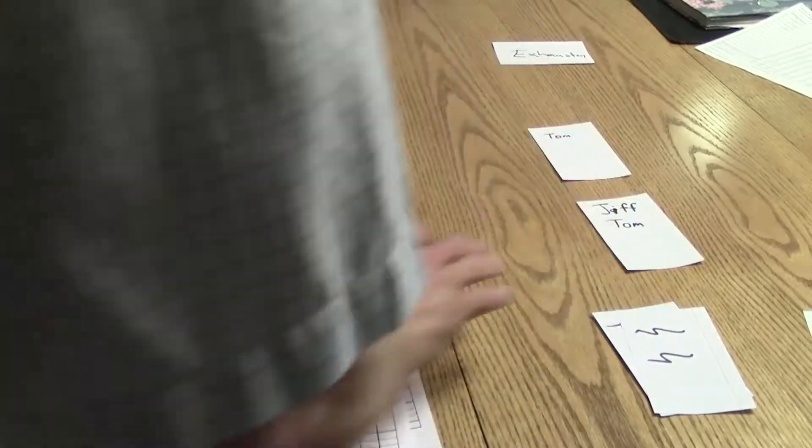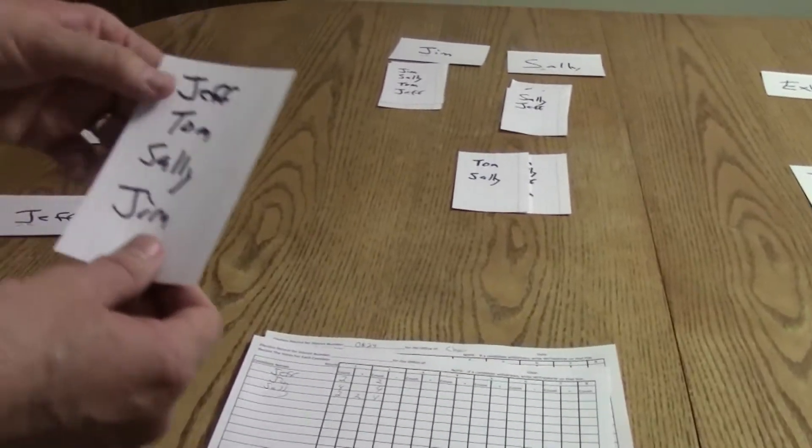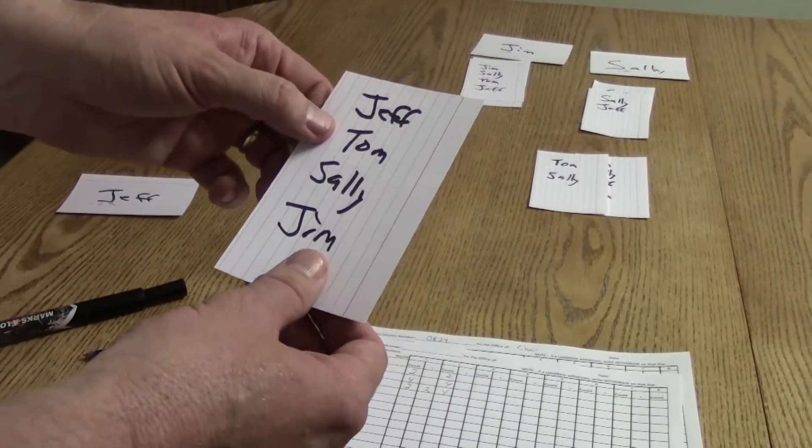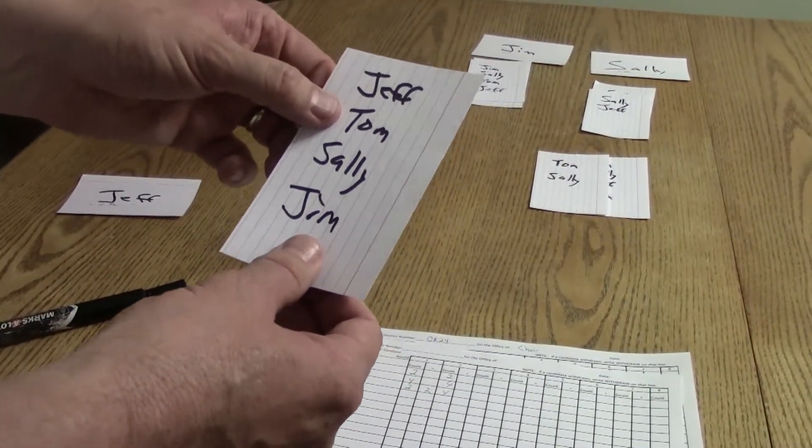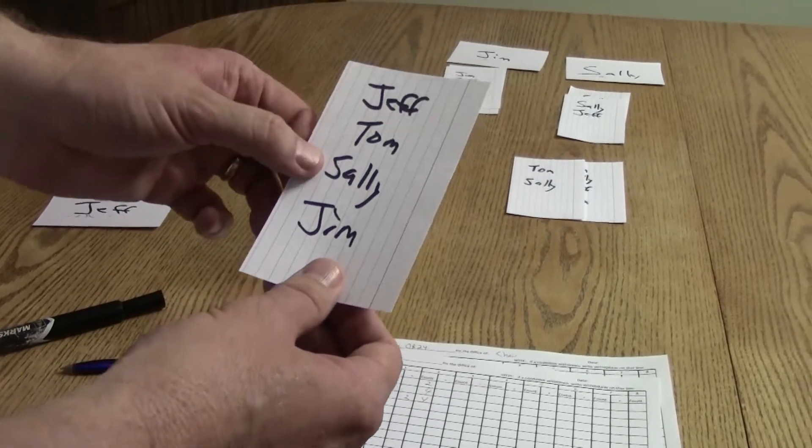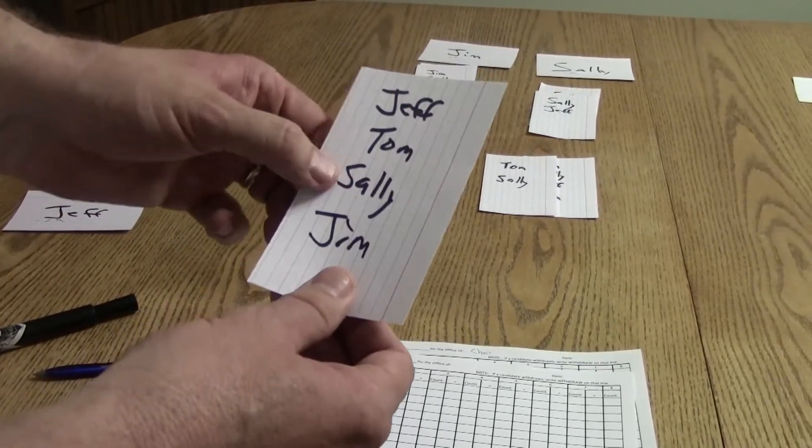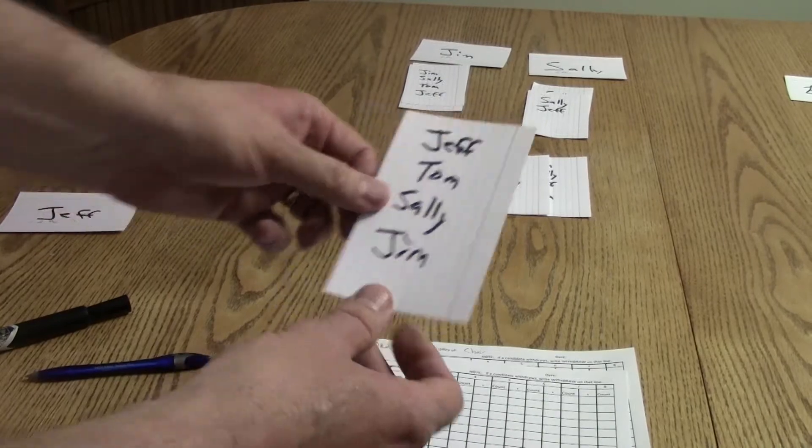This vote for Jeff then goes to Tom. He's been eliminated. So the next one on the list is Sally. That's the next one who hasn't been eliminated that we can give the vote to.